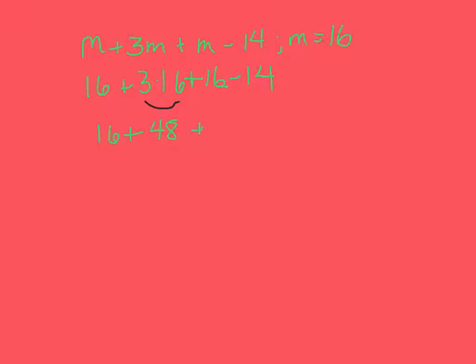So let's just review for a moment. Every time I saw an M, I replaced it with a 16. Then I followed my order of operations. I multiplied first. That gave me 48. And now I'm bringing down the rest of the problem. Hopefully that cleared it up for you.